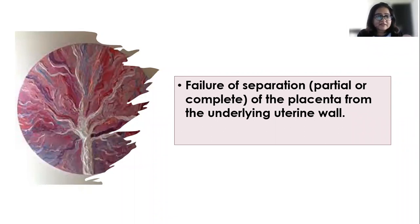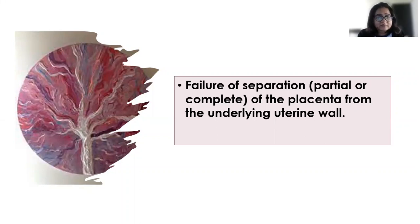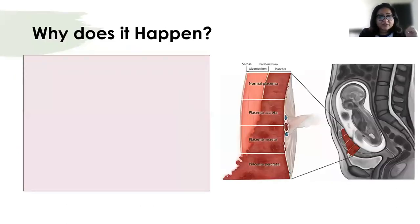Placenta accreta syndromes — which includes placenta accreta, placenta increta, and placenta percreta — are very dangerous for the mother. There is significant maternal morbidity and mortality because of the risk of postpartum hemorrhage during delivery. When the placenta doesn't separate and an attempt is made to separate it, the patient can bleed profusely, so it has high maternal mortality and morbidity.